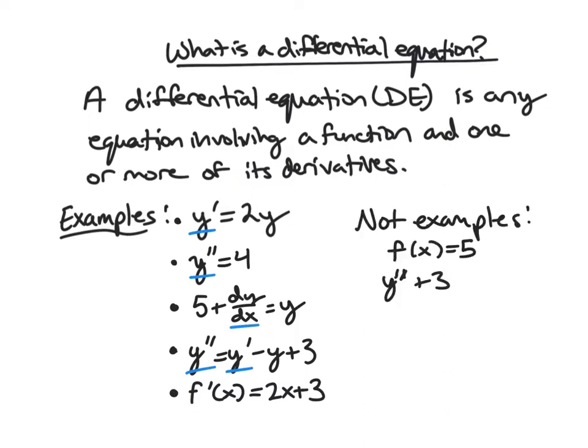Here are a couple of non-examples. So f(x) = 5 is definitely an equation, but it does not involve a derivative. So that's a no. And this other one is simply not an equation. It involves a second derivative, which is good, but not an equation. So this is not a differential equation.